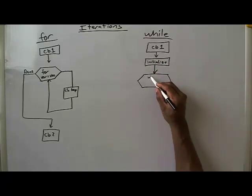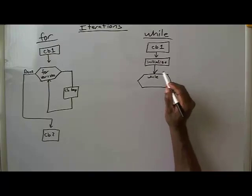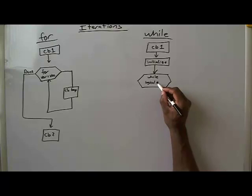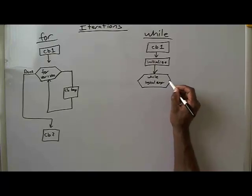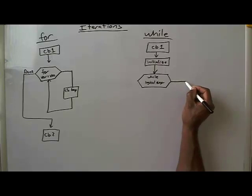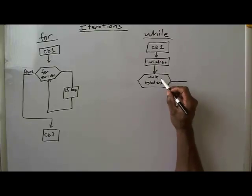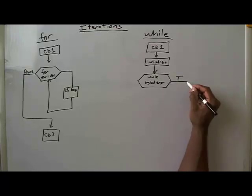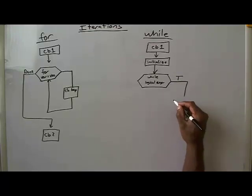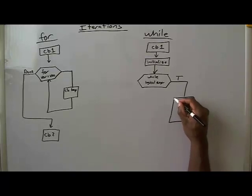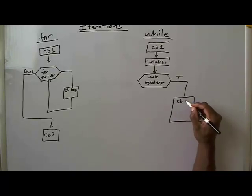Then you hit the while loop, and the while loop has some logical test — it's looking for a logical expression to be true or not. This is what I call the investigate block, which I'll talk about in a second. If that logical expression is true, then you execute the code inside the loop.